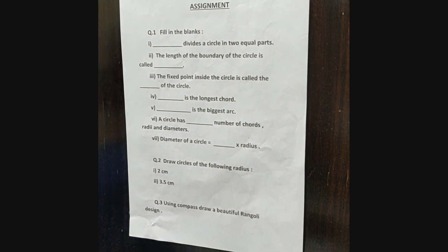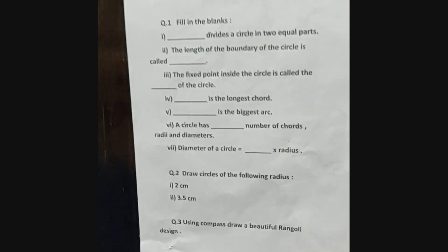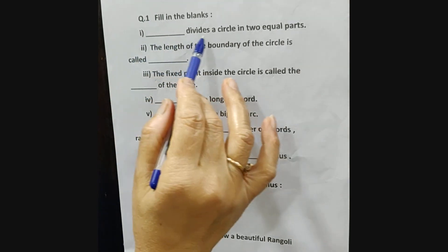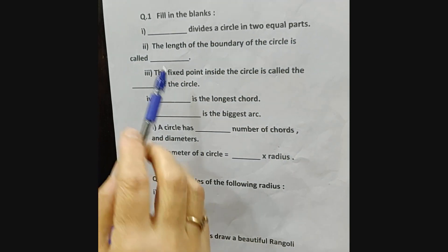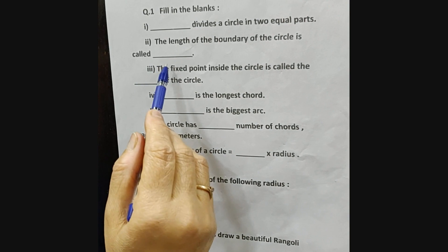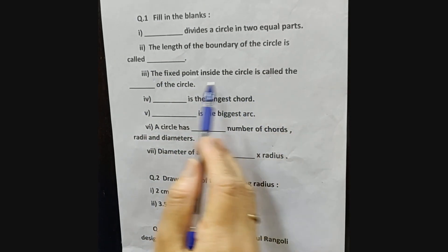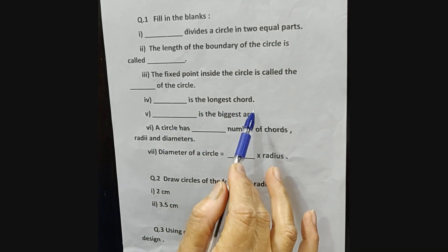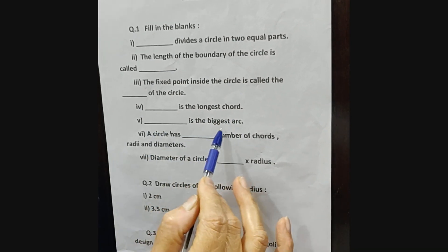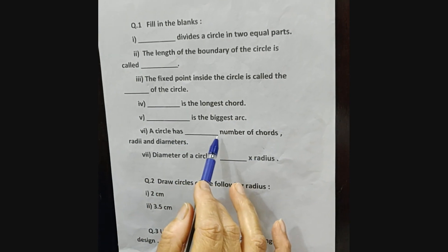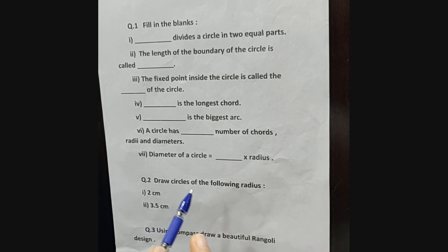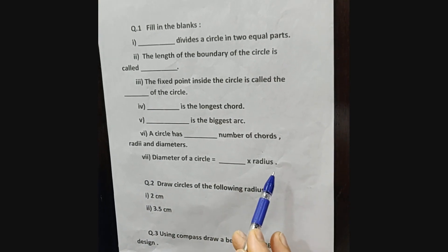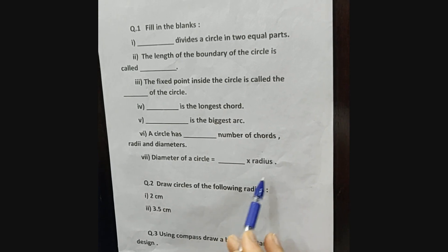Now there are some questions for your practice. First, you have to fill in the blanks: blank divides a circle into two equal parts. The length of the boundary of the circle is called blank. The fixed point inside the circle is called blank of the circle. Blank is the longest chord. Blank is the biggest arc. A circle has blank number of chords, radii, and diameters. Diameter of a circle is blank times radius.